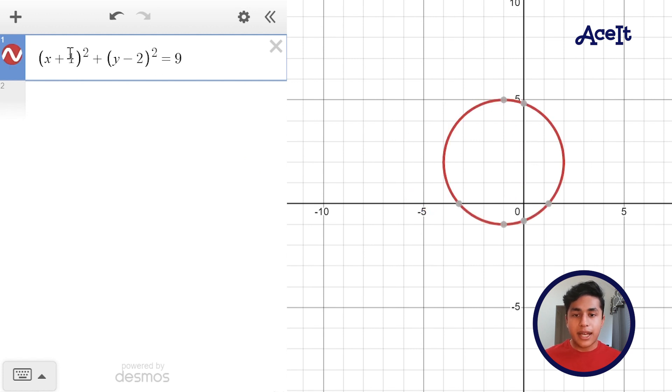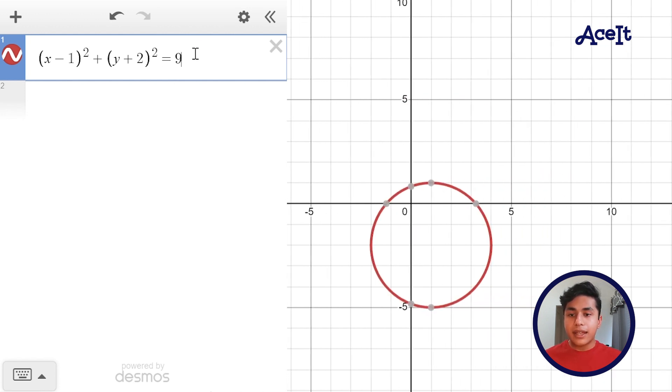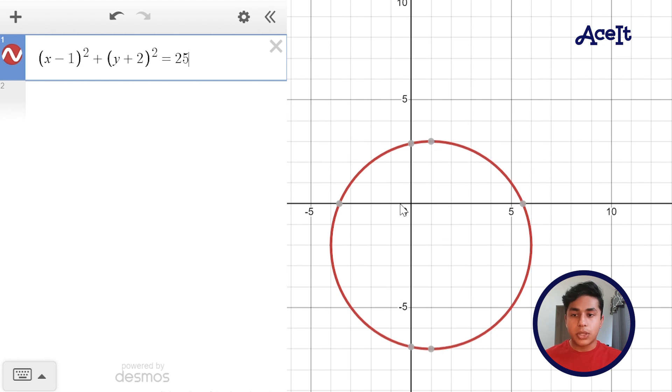So let's change it up a little bit. We got (x - 1)² + (y + 2)² = 25. We can count our radius as 5 units, and the circle is translated 1 unit to the right, and 1, 2 units down.